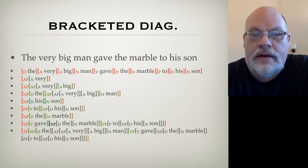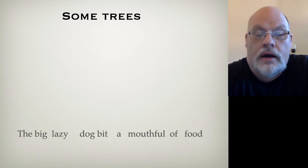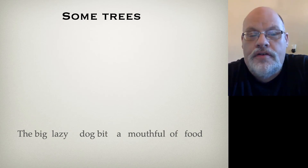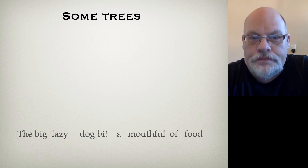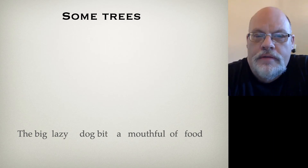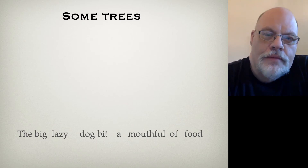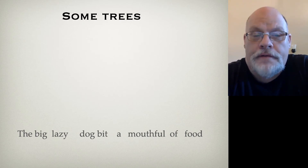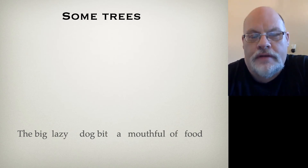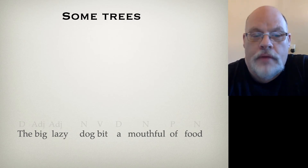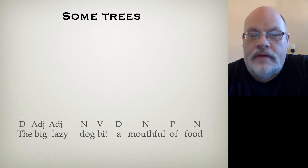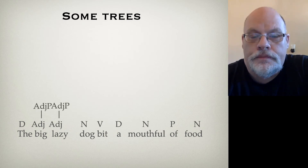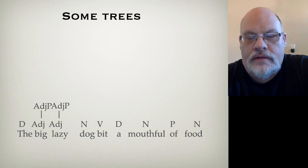Now let's look at another sentence: 'The big lazy dog bit a mouthful of food.' Here we have two adjective phrases. Unlike the previous sentence where the adverb modified the adjective, both of these adjective phrases modify the noun. So they're both going to get an adjective phrase on top and be closed off with no modifiers. Big and lazy are our adjectives — we're going to close them off with an adjective phrase each.